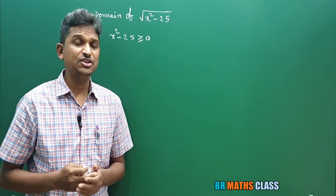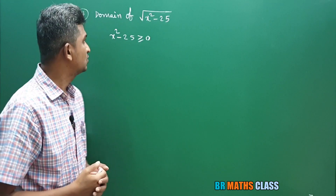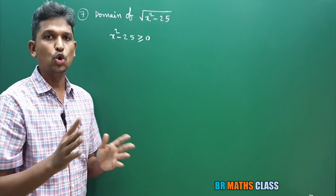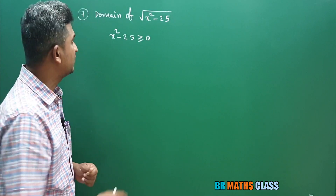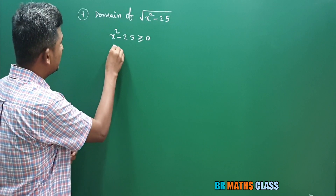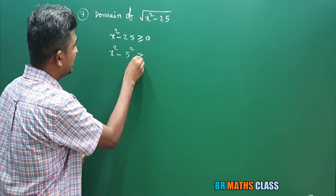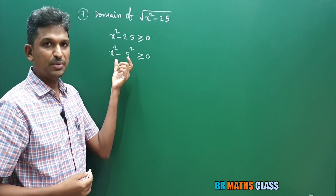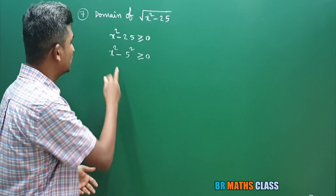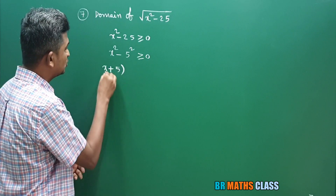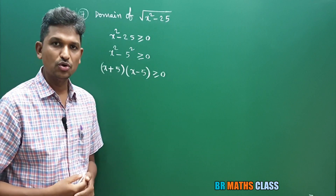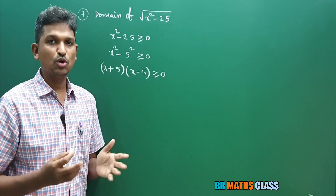If x squared minus 25 is less than zero then this function is not defined. I need to find for what values of x this inequality holds good. First I'll write this into linear factors. This 25 can be written as 5 squared. So x squared minus 5 squared is greater than or equal to zero. Now it is in the form of a squared minus b squared, which equals (a+b)(a-b). So x squared minus 5 squared can be written as (x+5)(x-5) greater than or equal to zero.